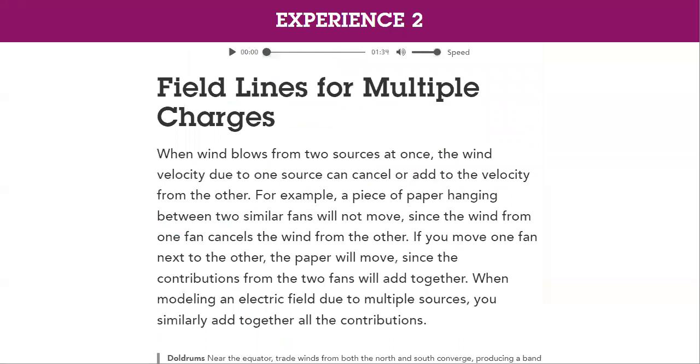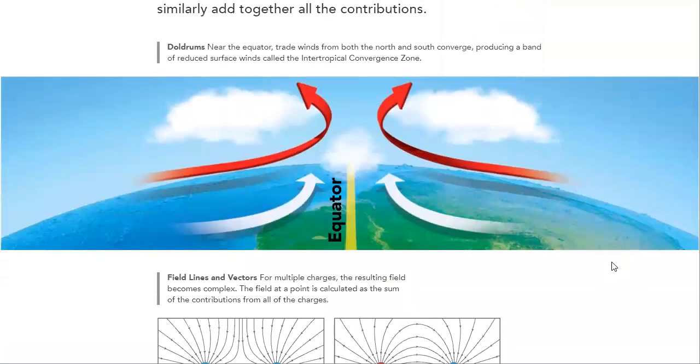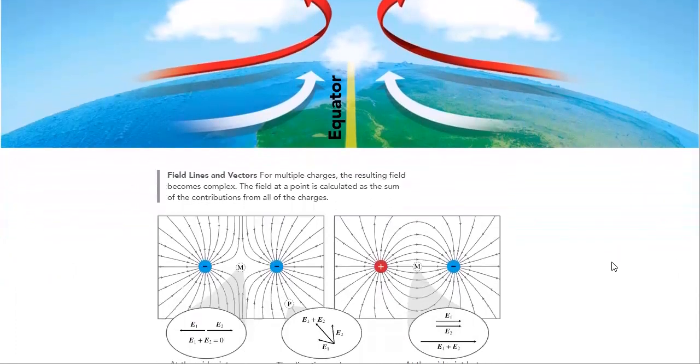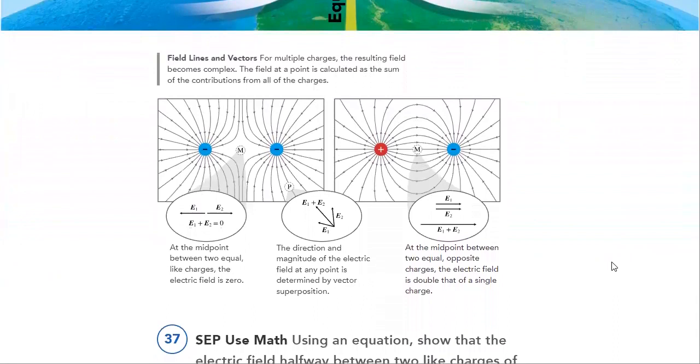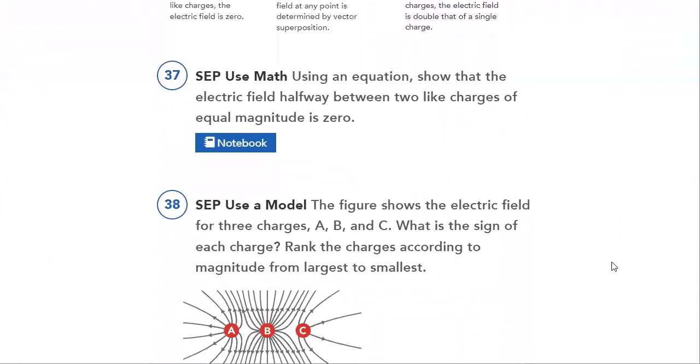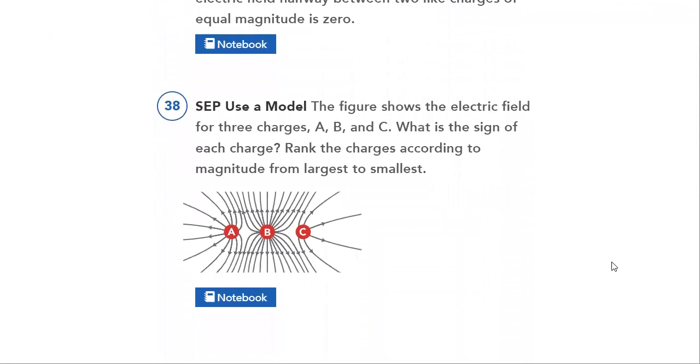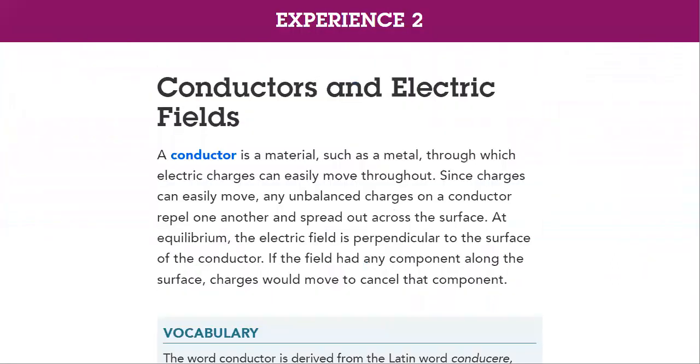Then, we will discuss field lines for multiple charges here. And doldrums near the equator. Trade winds from both the north and south converge, producing a band of reduced surface wind called the intertropical convergence zone. And then, we will see here how the field lines and vectors, how to draw them. And we will discuss them in details. I hope you understand this topic as you have understood the previous ones.